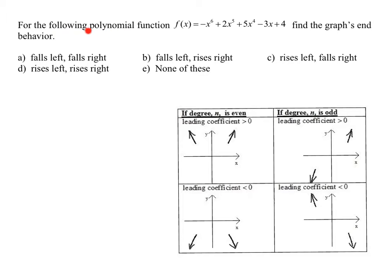In this problem, I need to look at a polynomial function and find the graph's end behavior. Let's review end behavior of polynomials. It depends on two things: the first is the degree, and the second is the leading coefficient. If the degree of the polynomial — meaning the highest exponent on any of the x's — is even, then the ends either both point up or both point down.